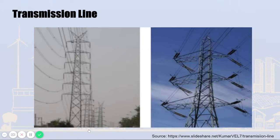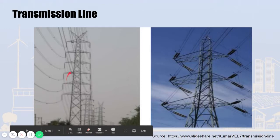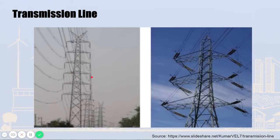Probably most people have seen these kinds of transmission lines around them. People think a transmission tower is just a structure to support lines. However, many techniques are reflected in this tower. Transmission line is composed of tower, lines, insulator, shielding line, surge arrester, and space damper.